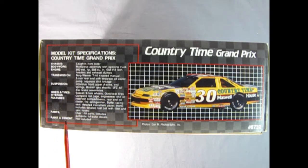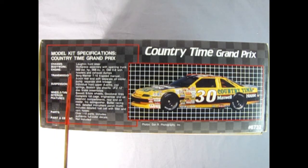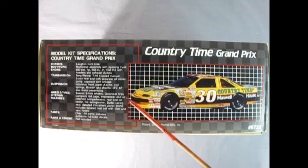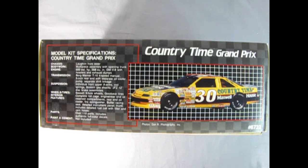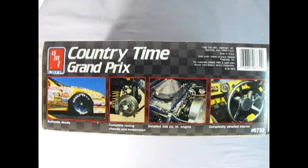On this side of the box we get the excellent model kit specifications for our Country Time Grand Prix and a nice side view of the car. I'll list this out in the comment section below. On this side we get photographs of the real car to use for reference, which is always nice.